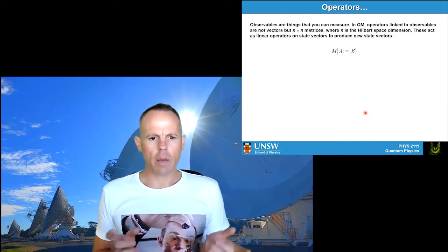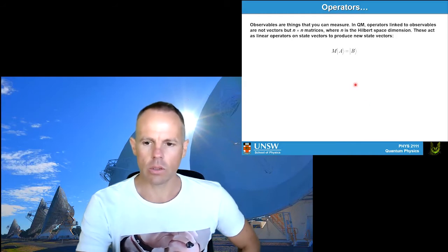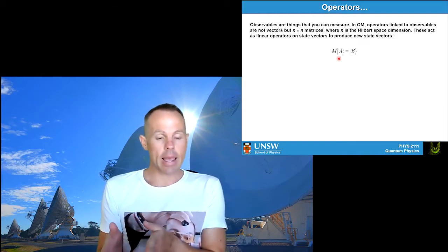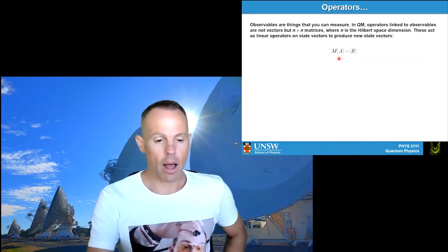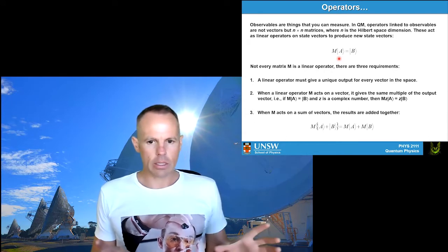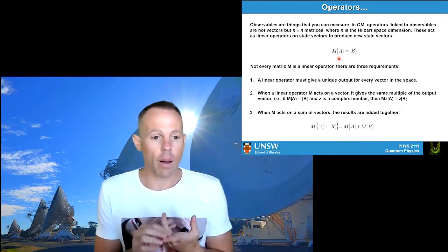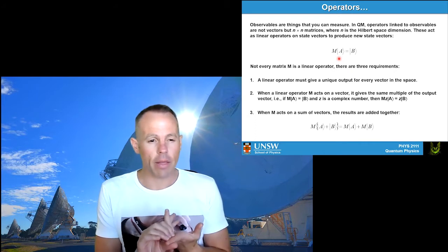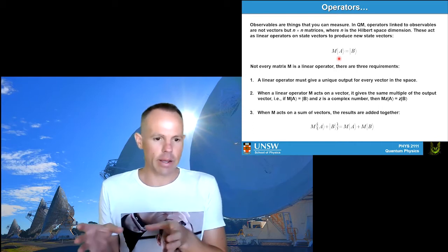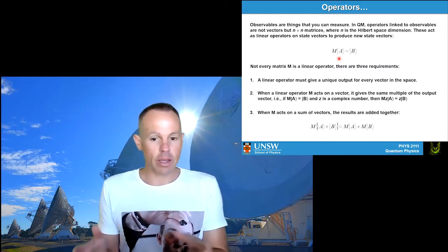Operators are matrices; they operate on state vectors and produce a new state vector. Mathematically, some matrix M multiplied by some ket |A⟩ gives some new ket |B⟩. Not every matrix M is a linear operator, and we care about this because in order to keep the mathematics well-behaved for quantum mechanics, we want to stick with linear operators. So we restrict ourselves to the subset of matrices that are linear operators.